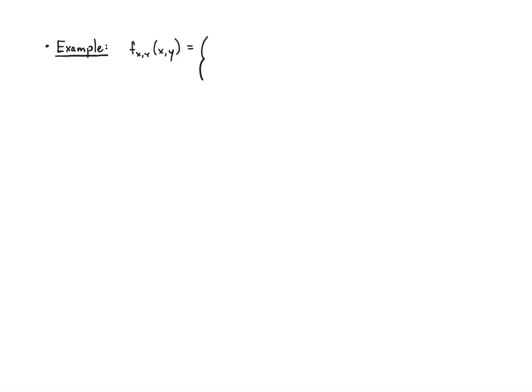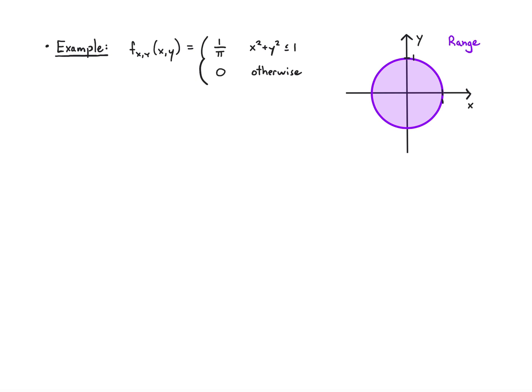Let's do a continuous example. I'm going to have a joint PDF which is constant over a circle of radius one. It has area pi, so I divide by pi. It lives over the region X squared plus Y squared less than or equal to one — that's a plot of the range. Let's work out the means of X and Y. I could get the marginals, but I'm not even going to bother with that. I'm just going to get the means directly using the joint PDF. This is something you can actually just see visually, but we'll go ahead and do it symbolically.